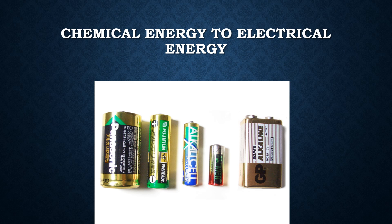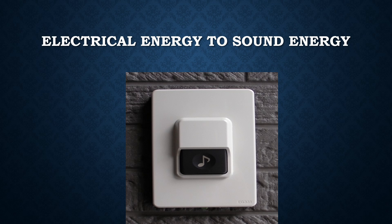Here we can see the example of chemical energy turning to electrical energy. The dry cells used in remotes have chemical energy in them, and when placed in remotes and other devices, it turns into electrical energy. We can also see that electrical energy turns to sound energy — when electricity is passed through a bell and we press it, the electric bell produces a sound.